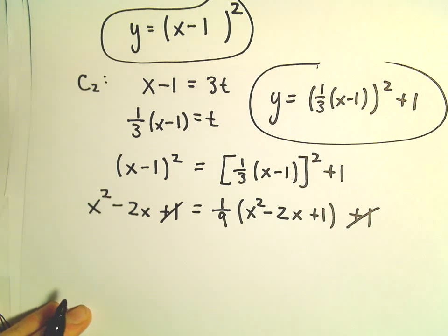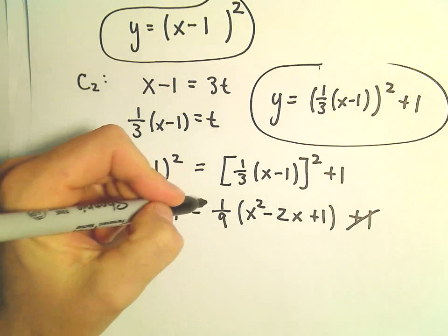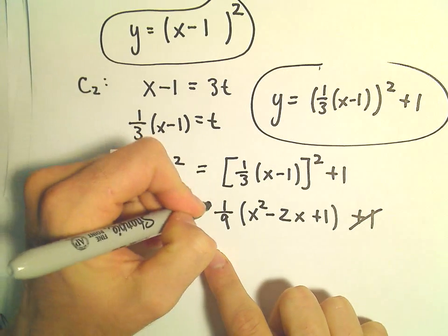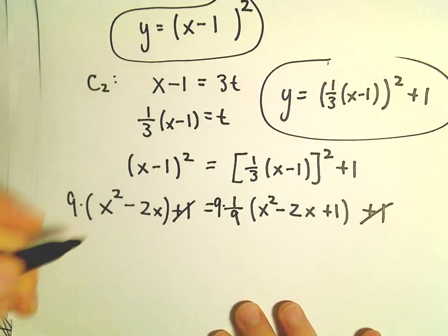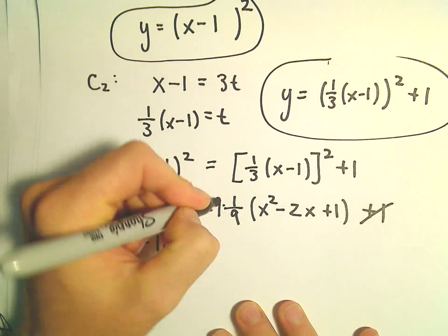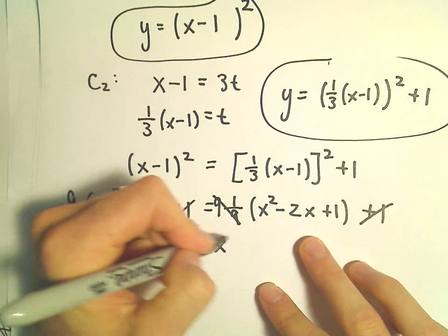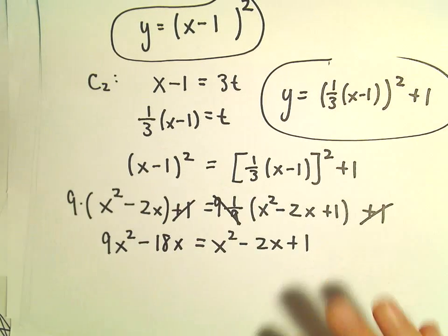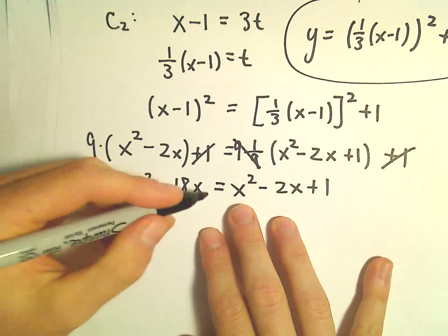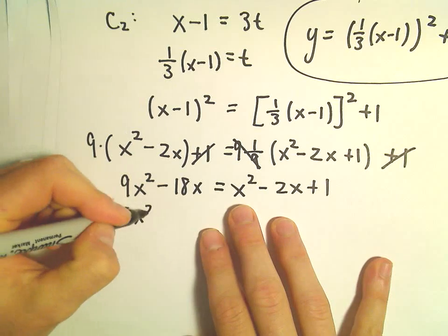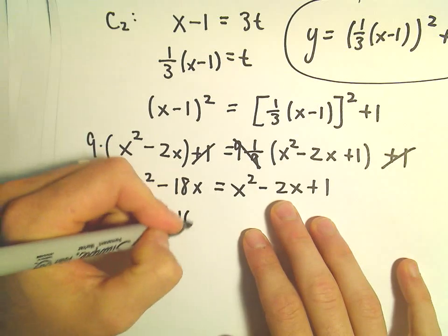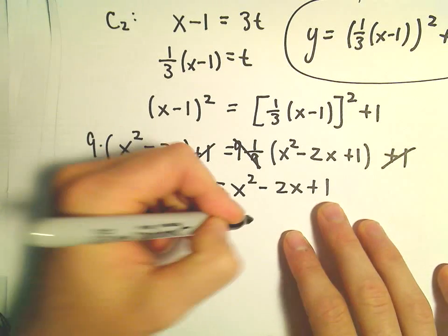I think what I'm going to do is get rid of the fraction as well by multiplying both sides by 9. So we can multiply by 9, multiply by 9. So on the left side, we'll have 9X squared minus 18X. On the right side, we'll be left with X squared minus 2X plus 1. All right, so now I'm going to make the right side equal to 0. So if we subtract X squared, we'll have 8X squared. If we add 2X, I guess we'll have a negative 16X. And then we can subtract 1 away.